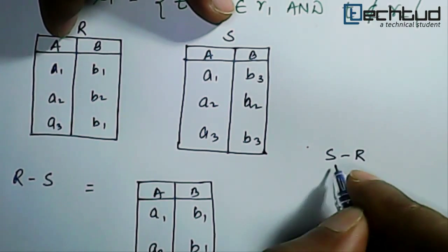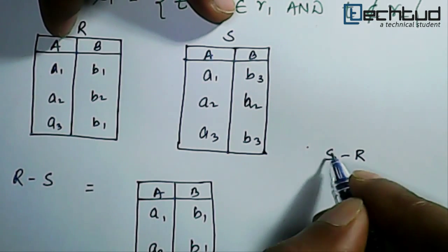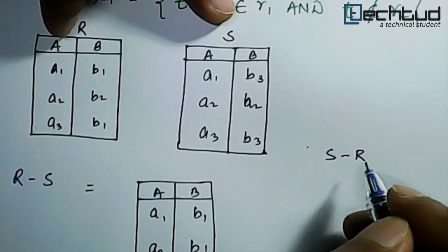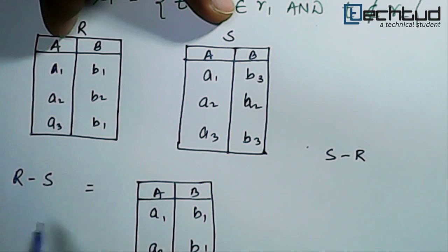In this case, S minus R we will check that the couple which is present in S but not present in R, right. This is the result for R minus S.